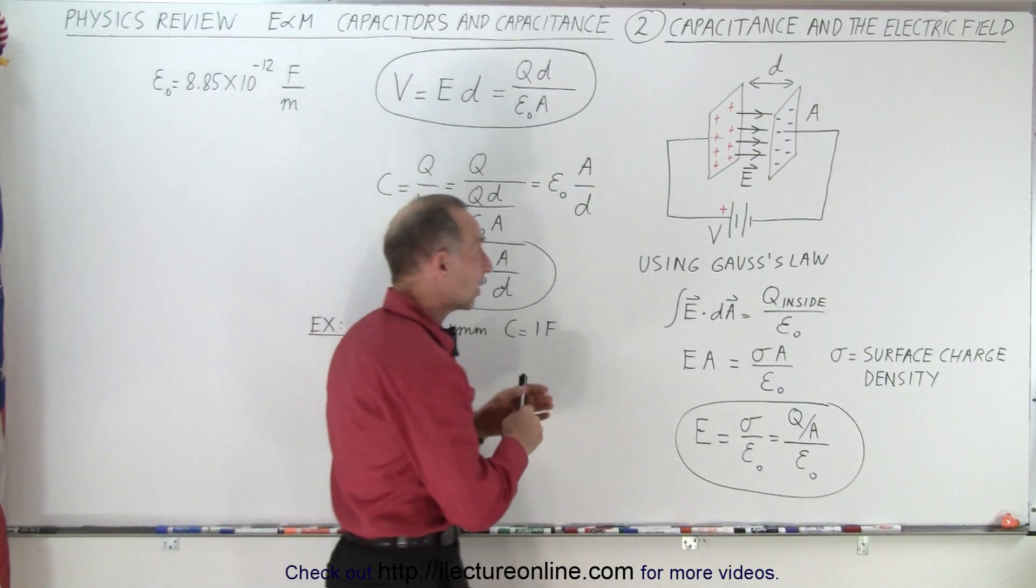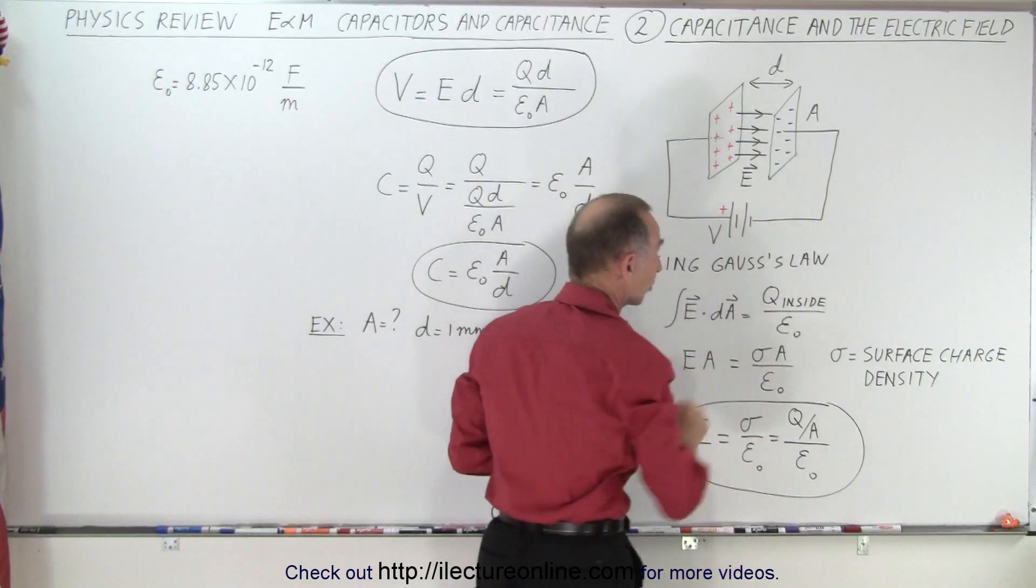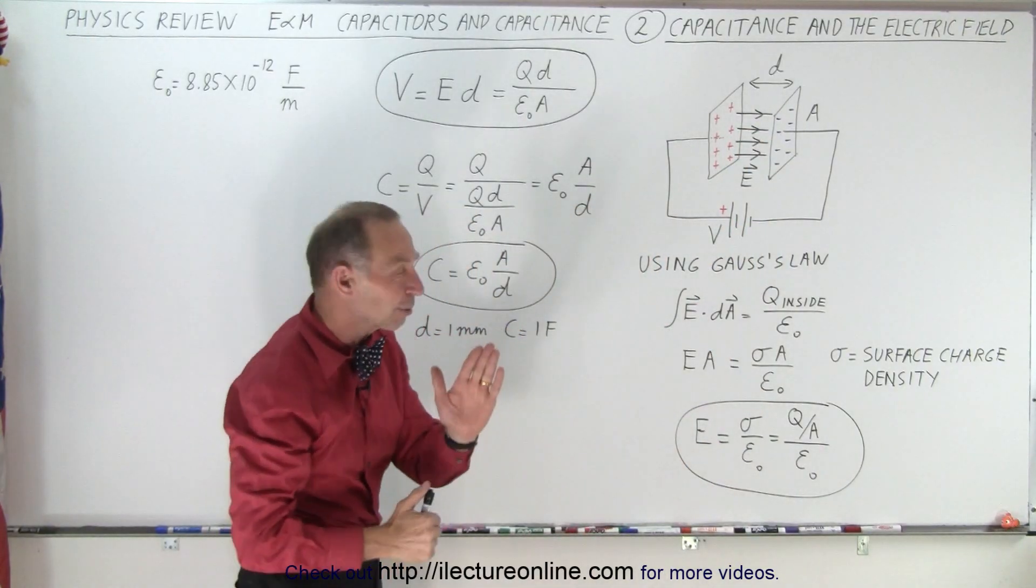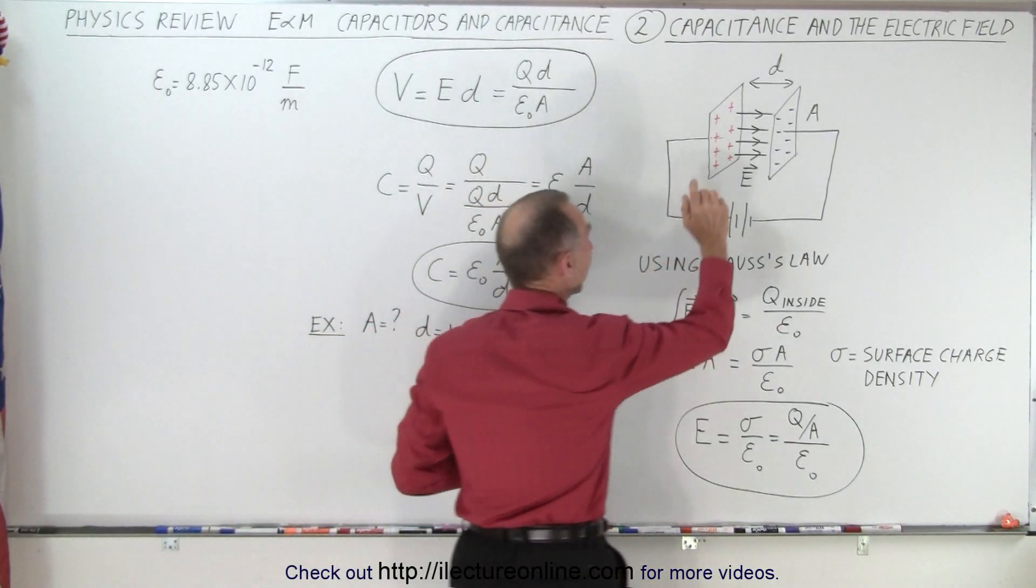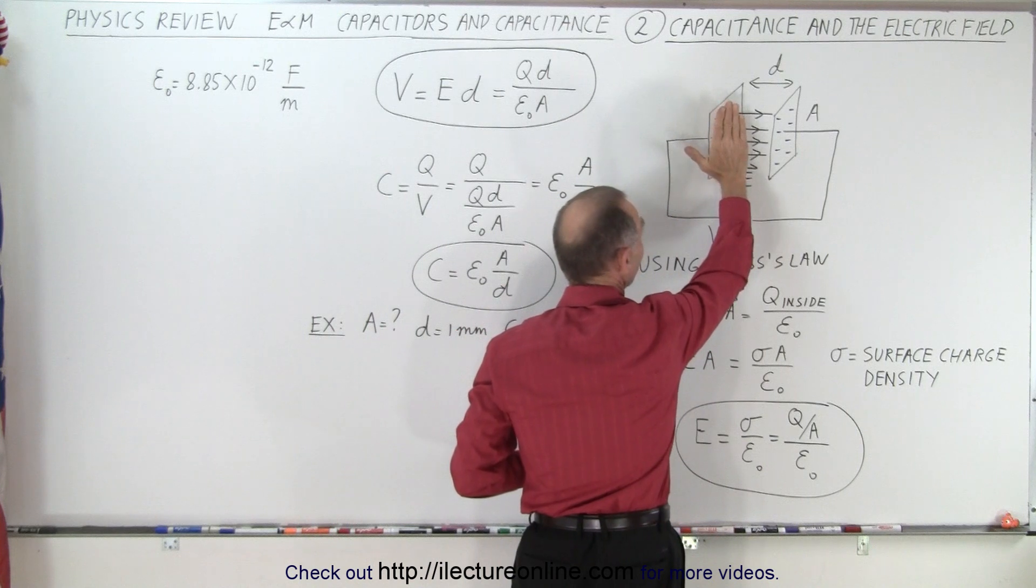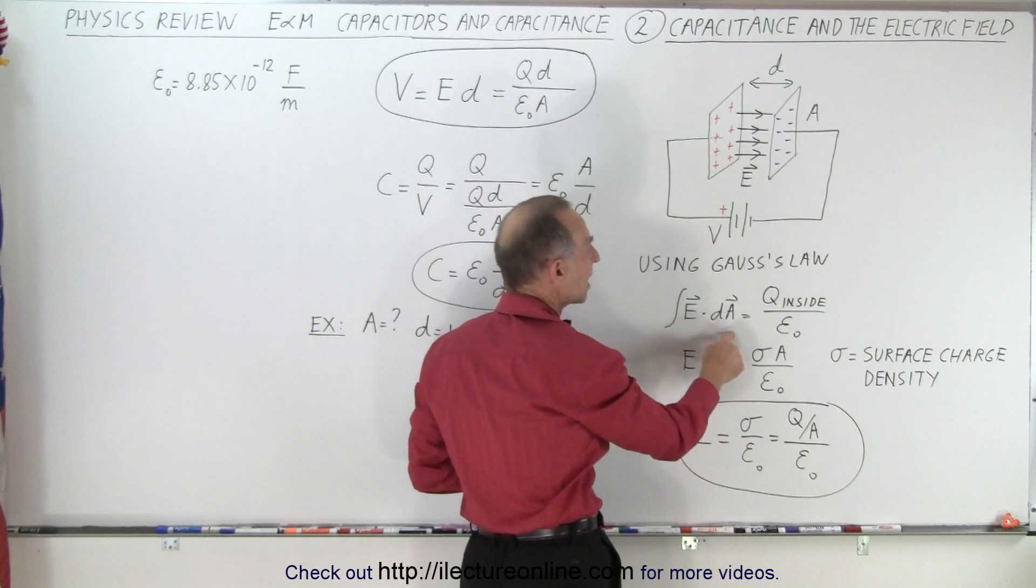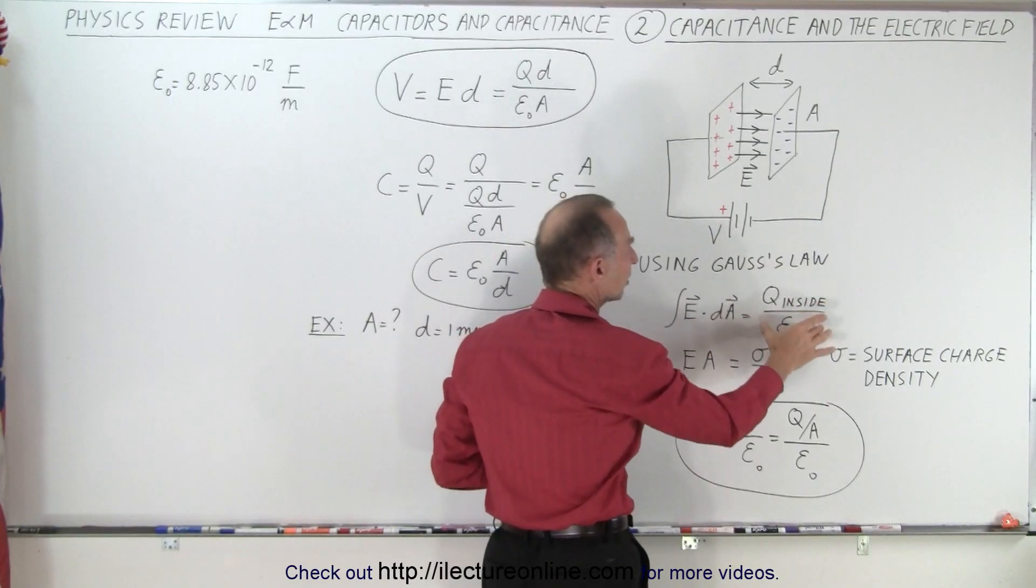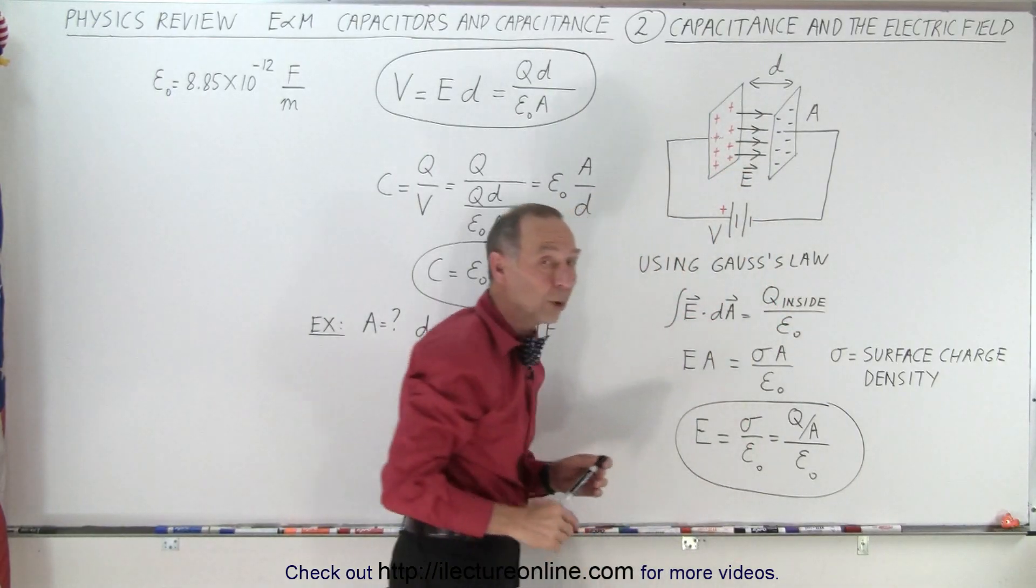But first let's go back to a capacitor, realizing that if there's positive charge on one plate and negative charge on the other plate, there will be an electric field between those two plates. And then using Gauss's law by drawing a Gaussian surface around one of the plates, we can say that the integral of E dot dA is equal to the charge inside divided by epsilon nought, and the charge inside would be the charge on one of those plates.